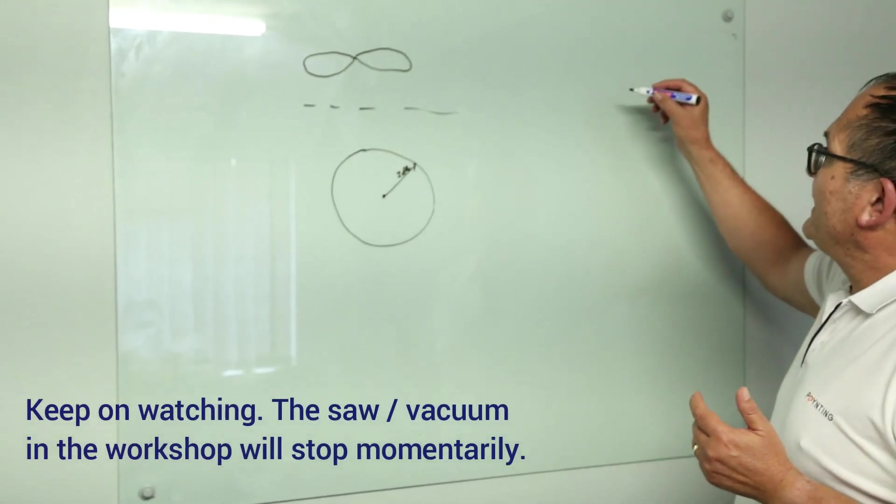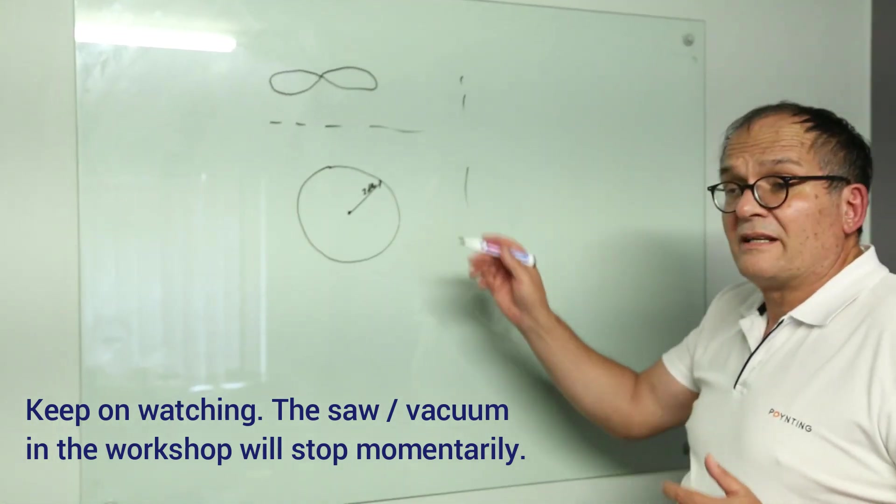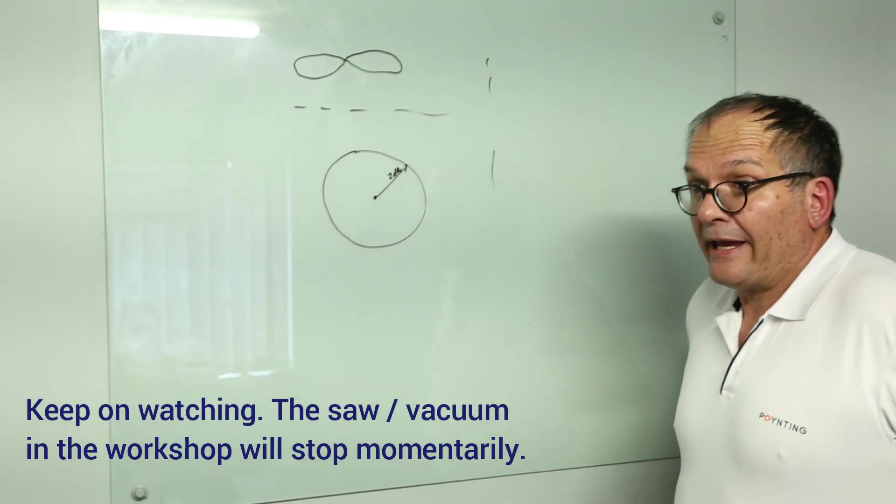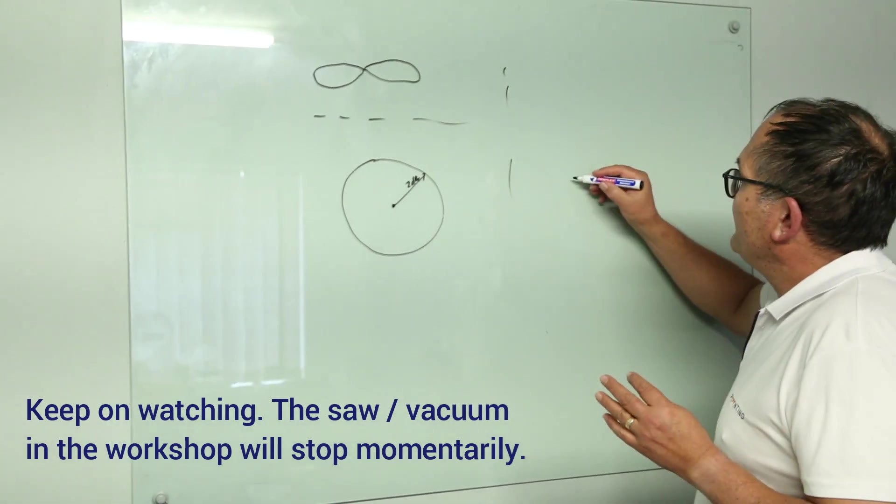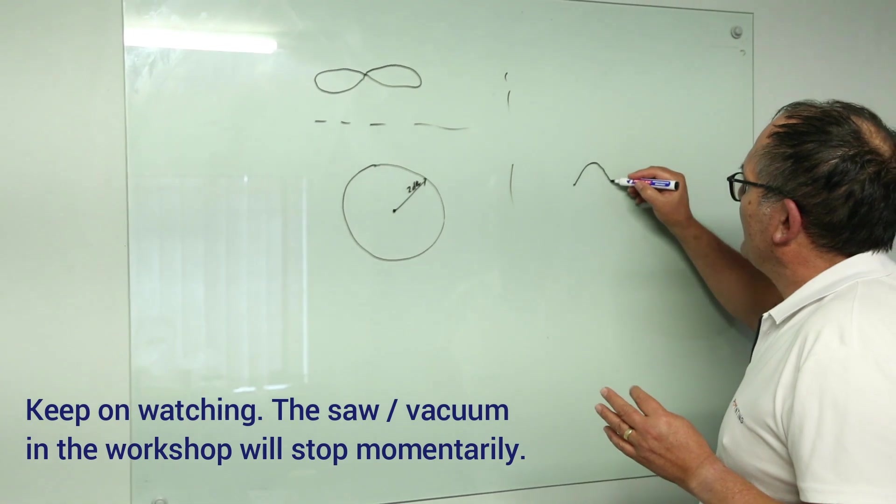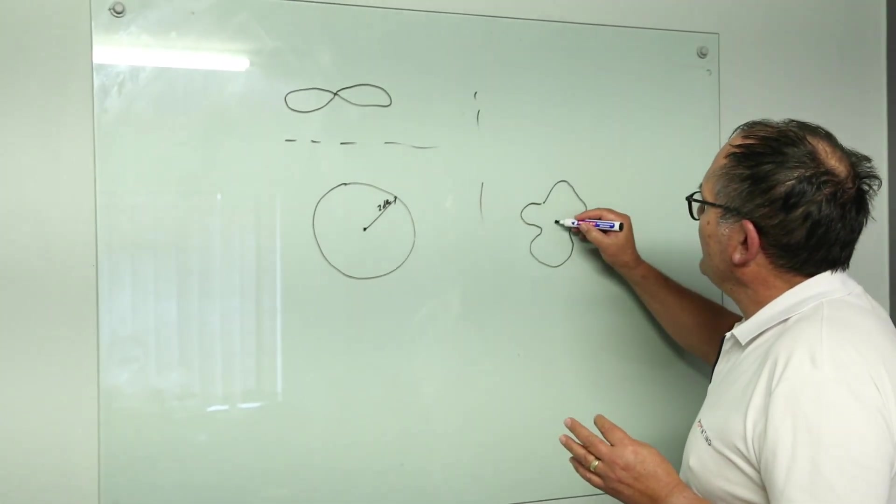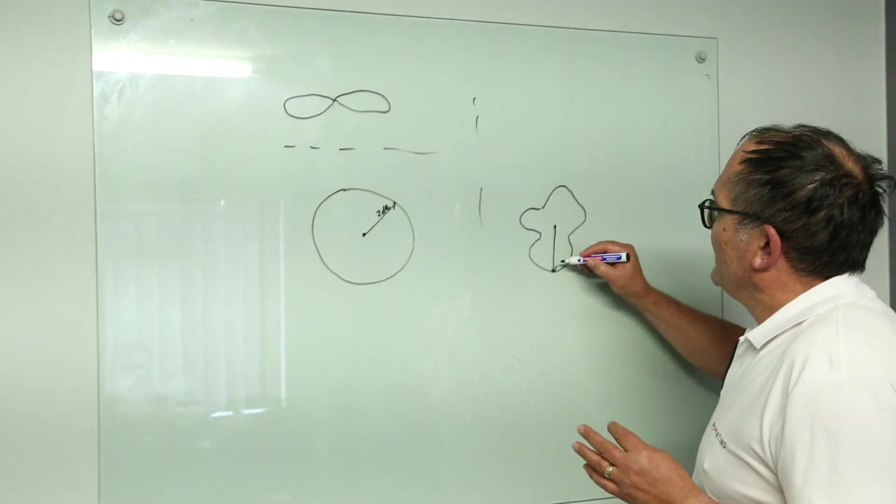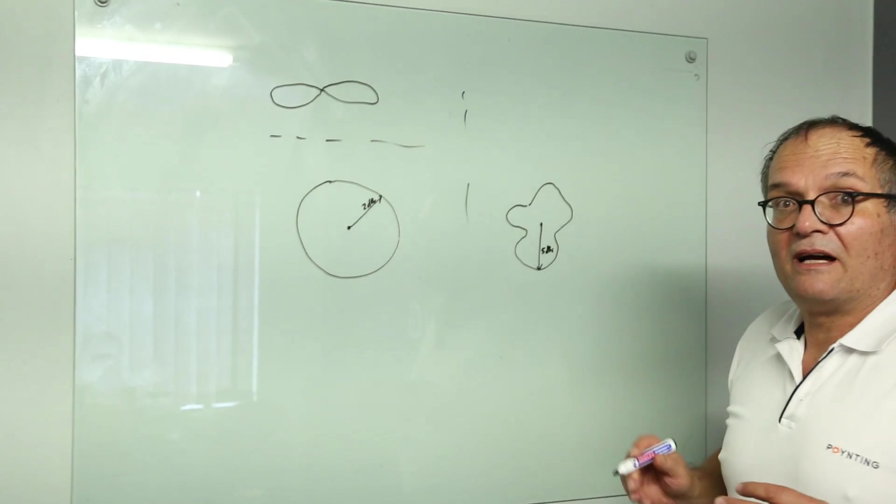Now we get competitors that say they've got an omni antenna and it's got a gain of 5 dBi. And people say, hey, that is a lot better than Poynting. Poynting's only got 2. But if you go look at that pattern here, it may look like this. And if you look, you may find that it has got 5 dBi when you face south.